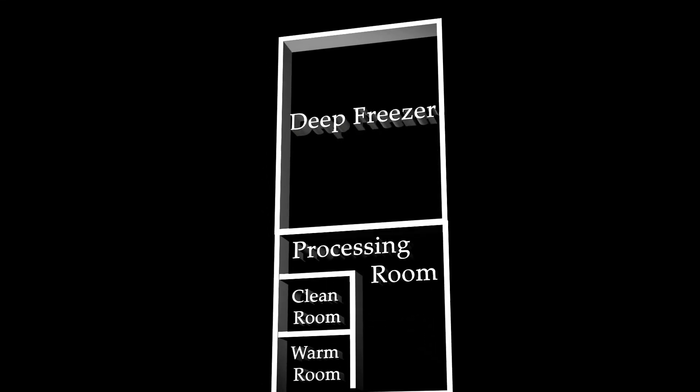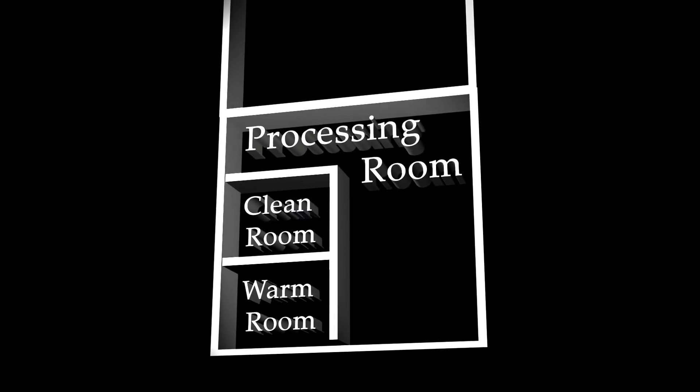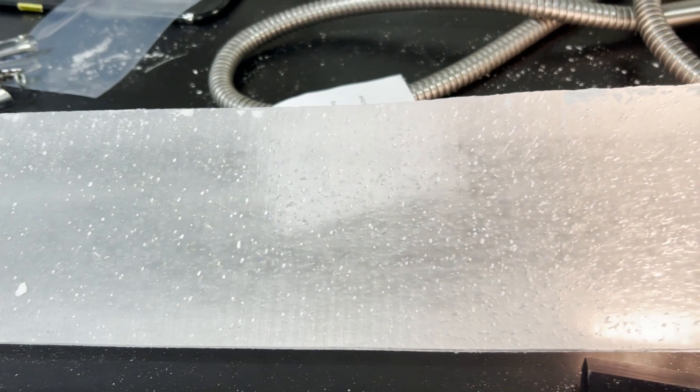This brings us to the processing room of the ice core facility, where cores can be examined for features such as ash layers, fractures, and gas bubbles.